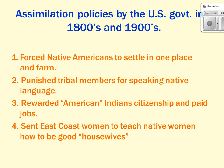Assimilation policies by the U.S. affected Native Americans. The government forced them to settle in one place and to farm instead of being hunters and gatherers. They punished tribal members for speaking native language rather than English, rewarded American Indians with citizenship and paid jobs, and sent East Coast women to teach Native American women how to be good housewives. The idea was that if all Native Americans looked and acted American, there wouldn't be tension between the two groups. This was an ethnocentric assimilation policy — saying our language and ways are better than yours — and some Native Americans resisted because they didn't want to lose their own culture traits.